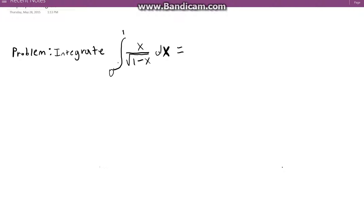So the first thing we need to do is set our limit. The limit as b approaches 1, I use b, you can use whatever letter you prefer, from 0 to b for x over the square root of 1 minus x dx.